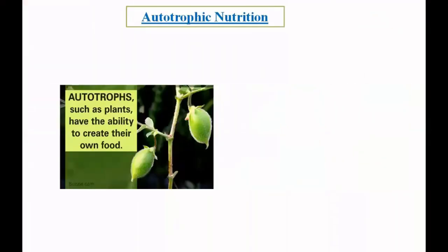Let us begin. Autotrophic nutrition is the mode of nutrition in which an organism prepares its own food and does not depend upon other organisms for their nutrition and survival. The organisms that follow the autotrophic mode of nutrition are known as autotrophs. Examples are plants, which have the ability to create their own food.